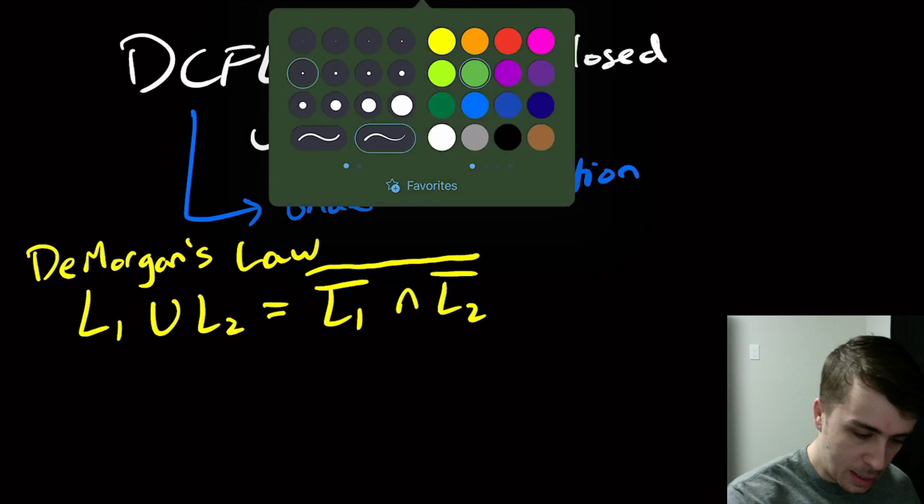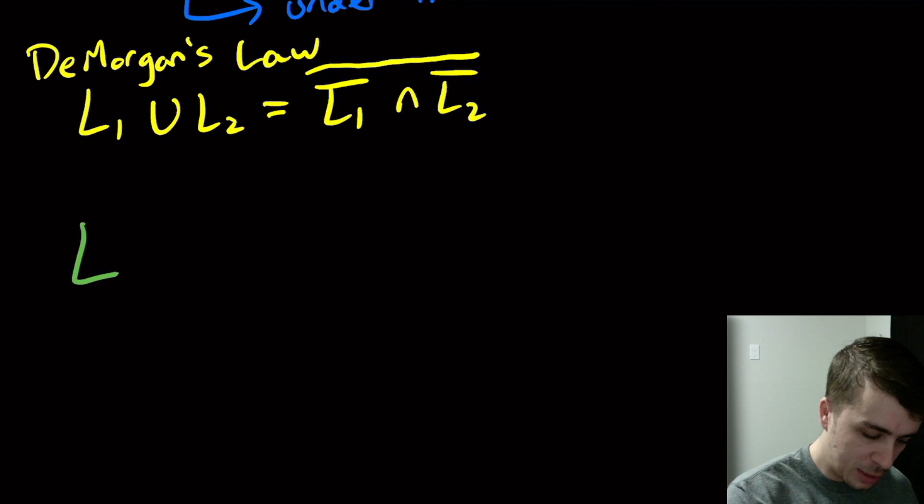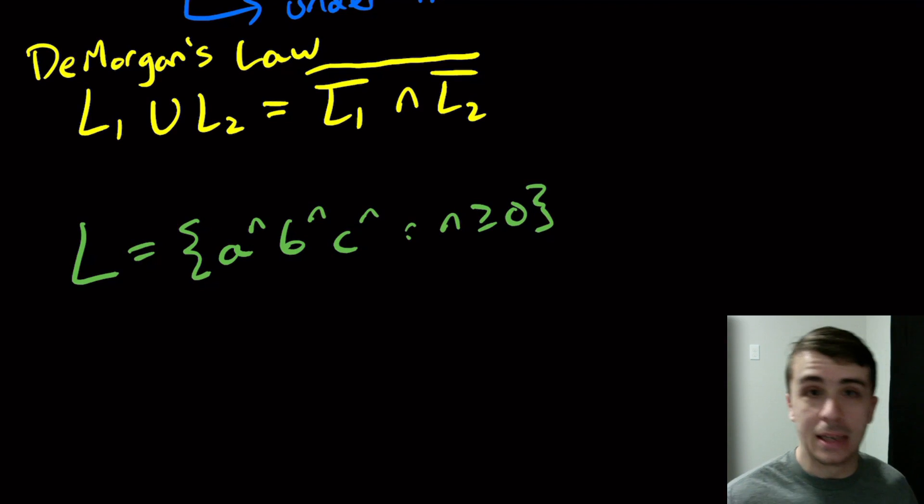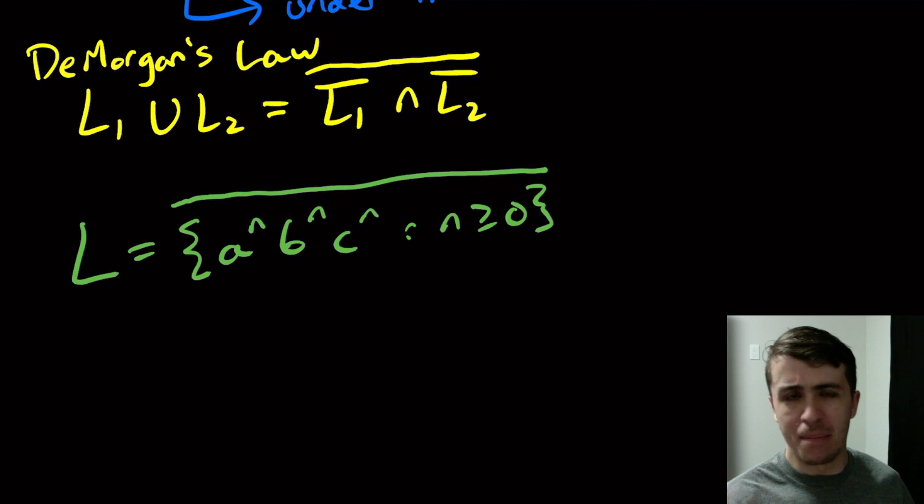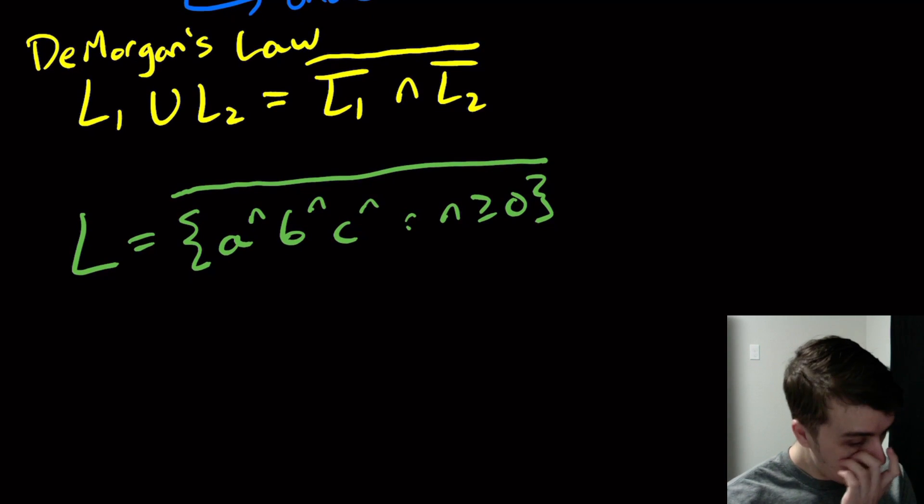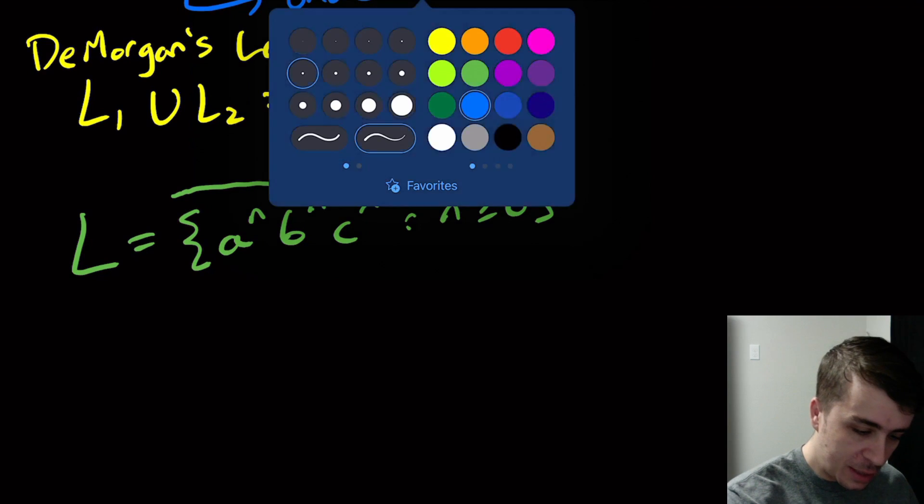So let's look at this language. Let's look at L, which is A to the N, B to the N, C to the N, N at least zero. And this language is obviously not context-free. We've already shown that. And so therefore, it's not even a DCFL. But what I claim is that if we take the complement of this thing, then I claim that the complement is in fact a DCFL. And I mentioned this, but I didn't actually prove it.